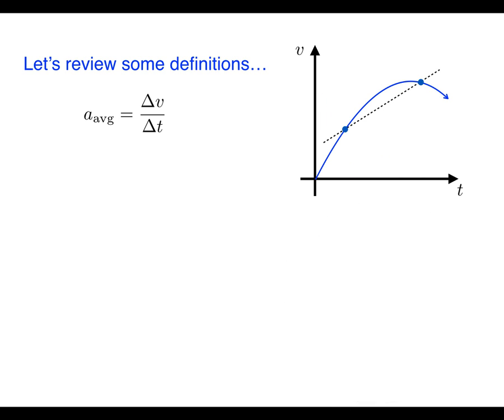Okay so what is instantaneous acceleration? Well instantaneous acceleration is defined as the limit as Δt approaches zero of Δv over Δt. Taking the limit as Δt goes to zero means that the points should be chosen so that they are extremely close together. So close in fact that I'll just eliminate the second point in this picture. As you can see as Δt approaches zero the dotted line becomes tangent to the graph. In other words the instantaneous acceleration of the object at a particular moment is equal to the slope of the line tangent to the velocity versus time graph.